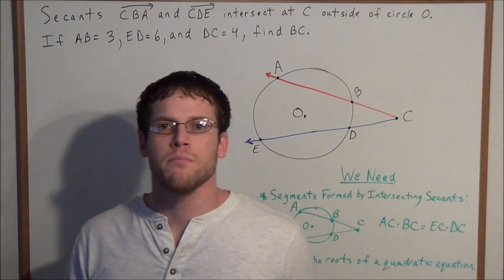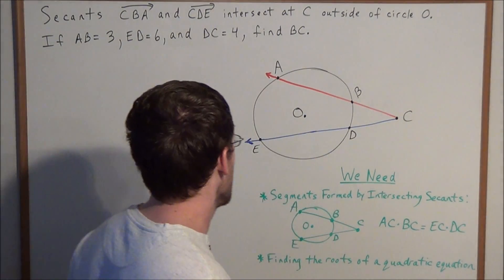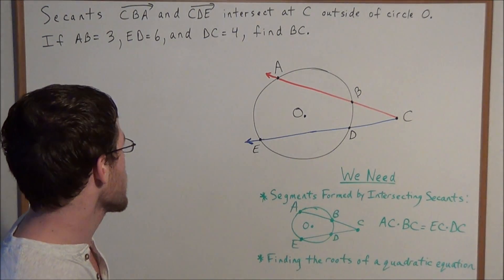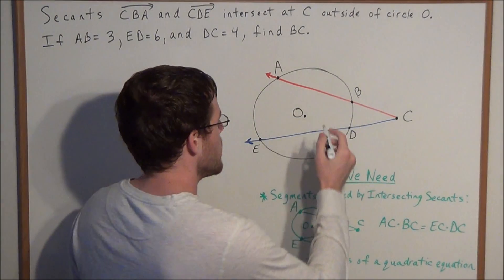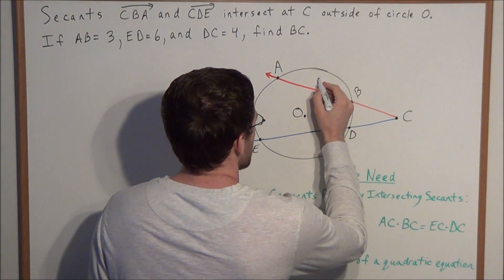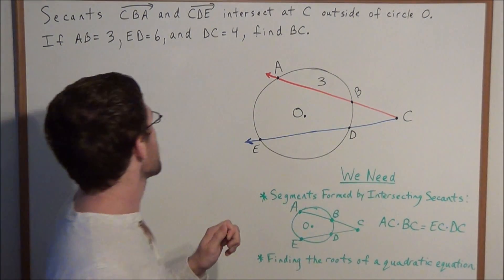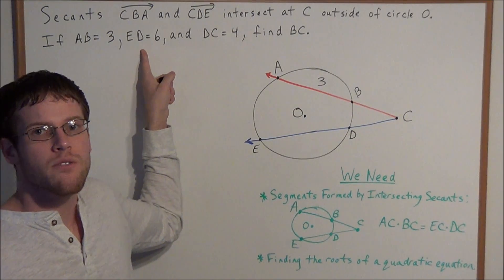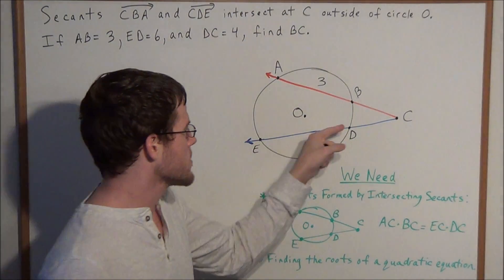The first thing we want to do is label the line segments that were given to us. We know that the length of line segment AB is equal to 3, so we can label this line segment 3. We also know that the length of line segment ED is equal to 6, so we can label this line segment 6.